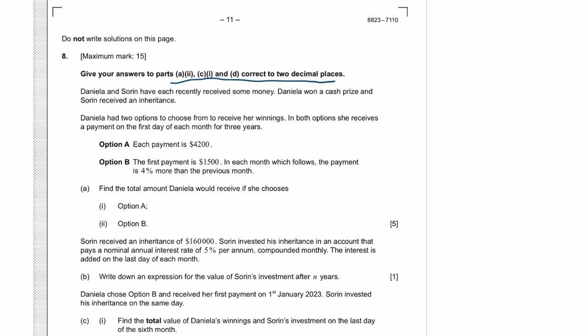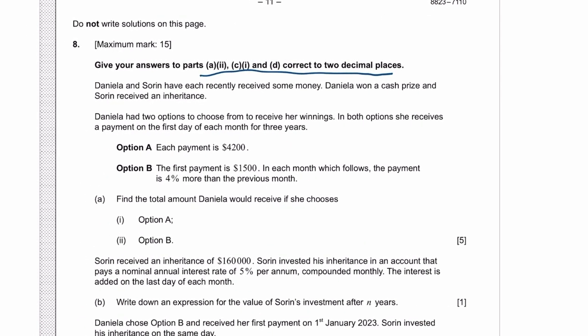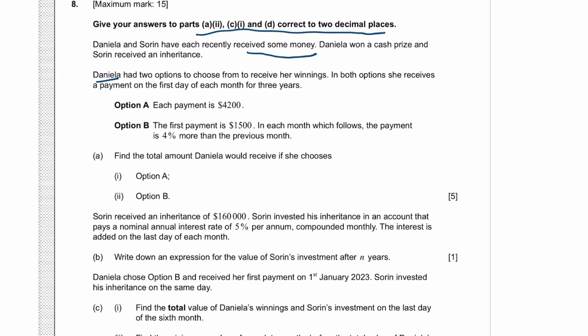Question 8 is the money question. They got some money recently. They have options of how to receive the earnings. In both options, receive a payment on the first day of each month for three years. Each payment is $4200. First payment, option B first payment is $1500, and in each month which follows is 4% more. Find the total that you get for three years, for every month, so times 3 times 12.